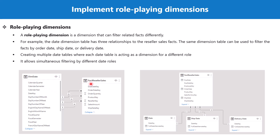A role-playing dimension is a dimension that can filter related facts differently. Instead of having just one date table, we create three date tables. So the solution is to have three tables — all date tables — and connect each date table with one key in your fact table. These three dimensions — the date table, ship date, and delivery date table — are called role-playing dimensions. The date dimension table has three relationships to the reseller sales fact table, and the same dimension table can be used to filter the facts by order date, ship date, or delivery date.